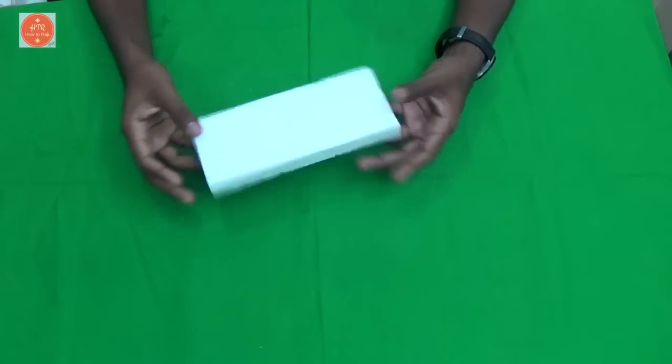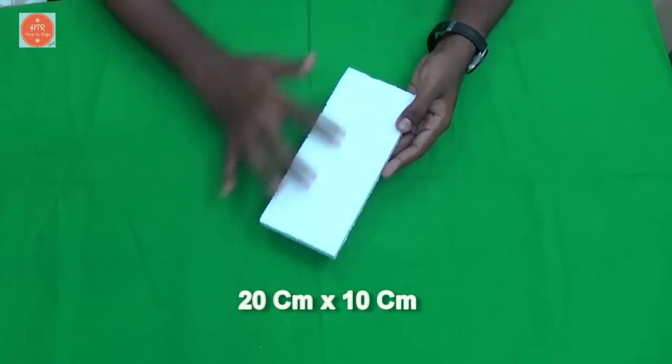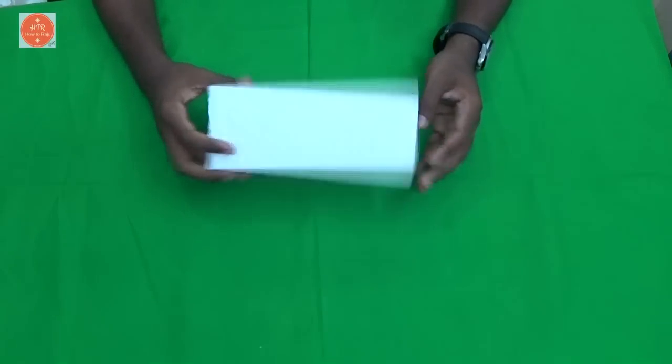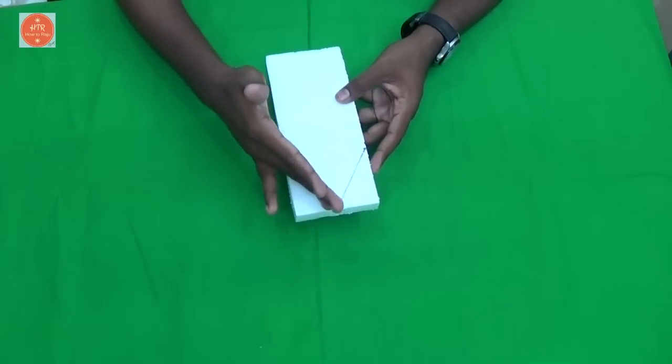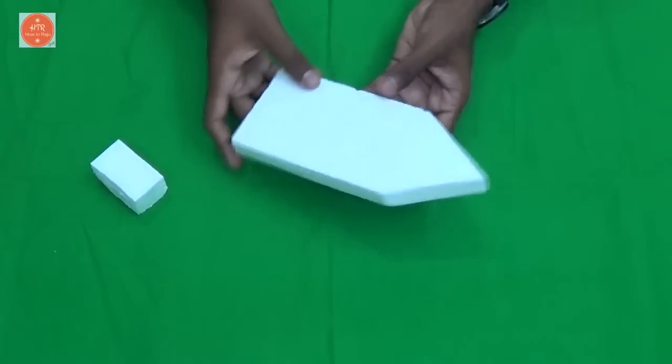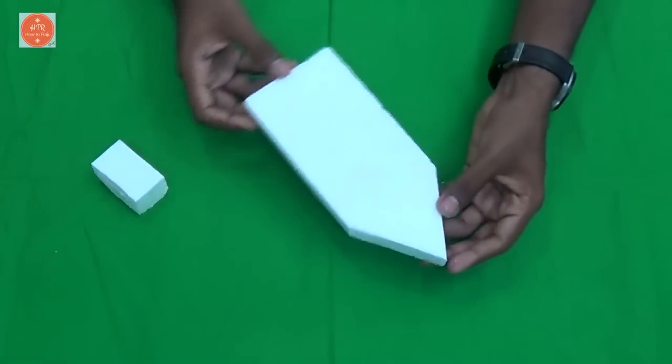First, take the thermacol piece in 20 cm length and 10 cm width like this. Then draw the borders like this. Then I am going to cut the unwanted spaces. Now I have cut the unwanted spaces. Look at this.